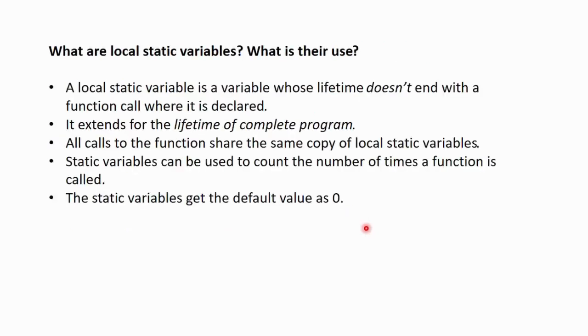Next question, what are local static variables and what is their use? A local static variable is a variable whose lifetime doesn't end with a function call where it is declared. It extends for the lifetime of complete programs. All calls to the function share the same copy of local static variables. Static variables can be used to count the number of times a function is called. The static variables get the default value as 0.